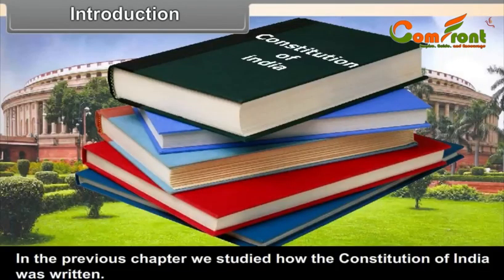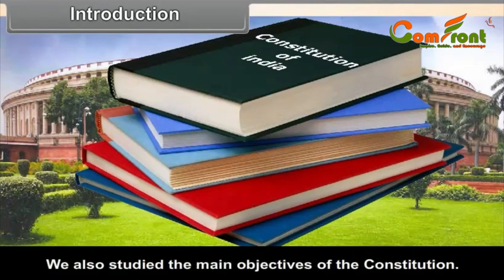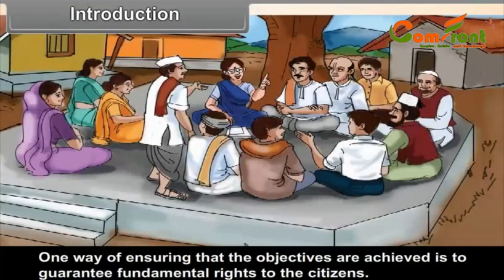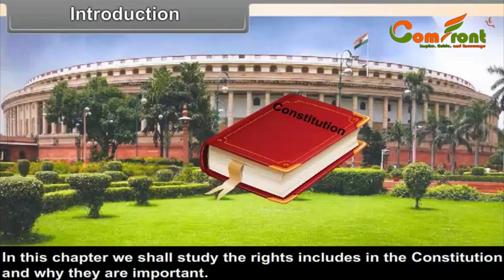Chapter 6: Fundamental Rights and Duties. In the previous chapter, we studied how the Constitution of India was written and its main objectives. One way of ensuring that the objectives are achieved is to guarantee fundamental rights to the citizens. In this chapter, we shall study the rights included in the Constitution and why they are important.